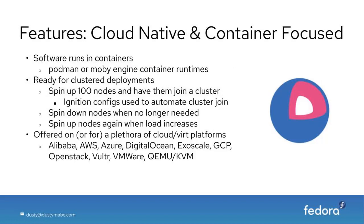The next feature is being cloud-native and container-focused. Software runs in containers, and users have two options: Podman or MobiEngine, also known as Docker. If you're coming from Container Linux, you still have Docker, or you can try out Podman. Fedora CoreOS is ready for cluster deployments — you can spin up 100 nodes and have them join a cluster, with Ignition configs automating the cluster join. It's also offered on a plethora of clouds and virt platforms.